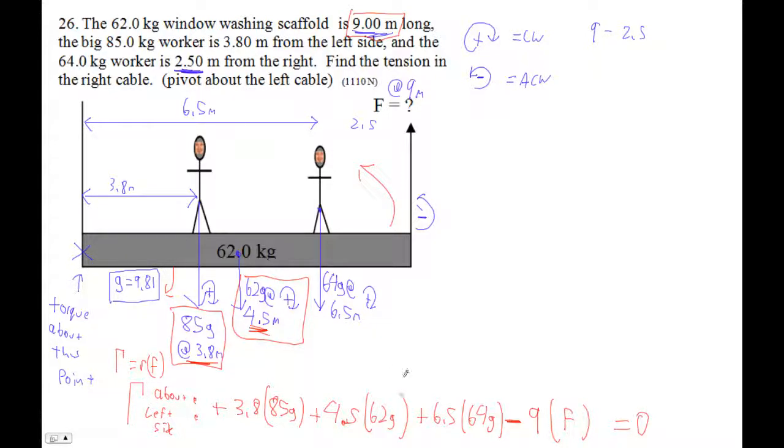So now we can solve this. This is one variable we can solve for that F, so let's do it. So what I'm going to do is I'm going to go 3.8 times 85 times 9.81. Remember, these guys are 9.81. That's another 9.81. It's just your expression. It looks so much nicer if you just make it like that. So then I'm going to go plus 4.5 times 62 times 9.81.